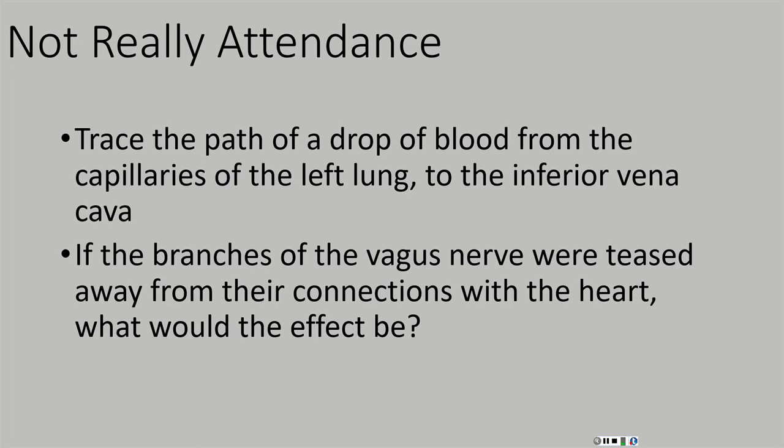We're still carrying oxygenated blood, and now we've left the heart to deliver that oxygen to the tissues of the body. From the aorta, we get into smaller and smaller arteries, eventually into arterioles, eventually into capillaries at the body tissues. Since we're heading to the inferior vena cava, these body tissue capillaries are somewhere in the lower portion of the body, below the chest. We drop off the oxygen at those capillaries, move into venules, then into bigger and bigger veins, until eventually we're in the inferior vena cava.